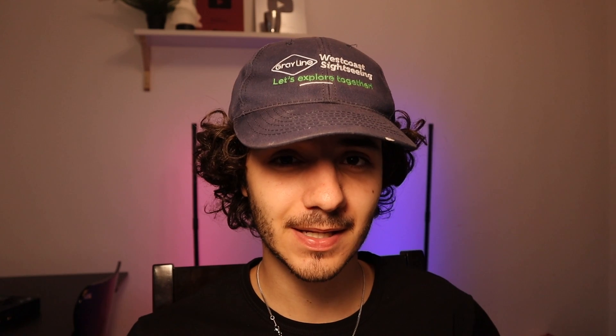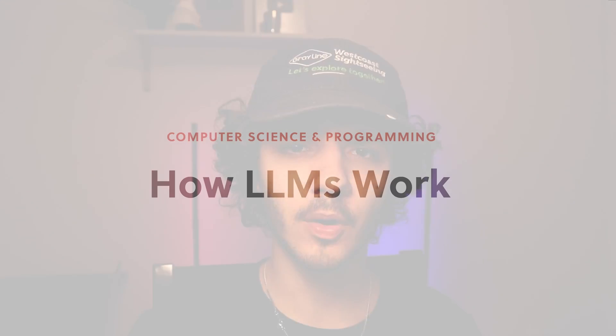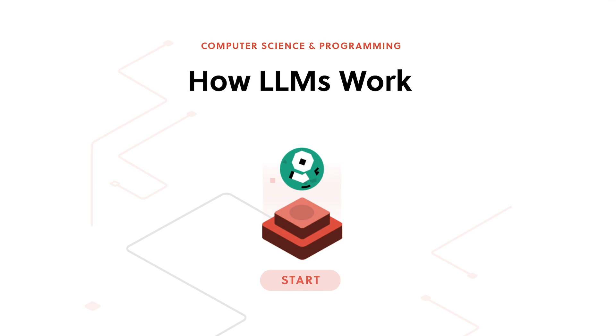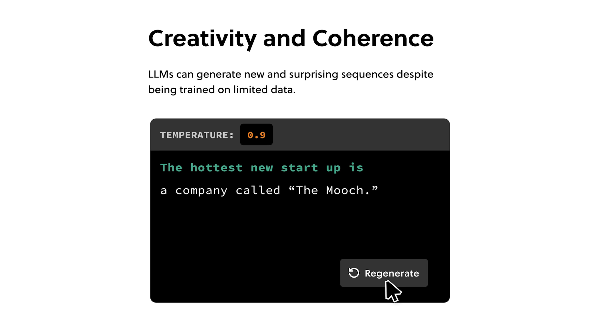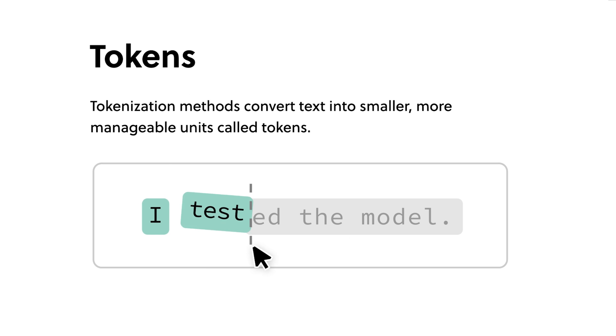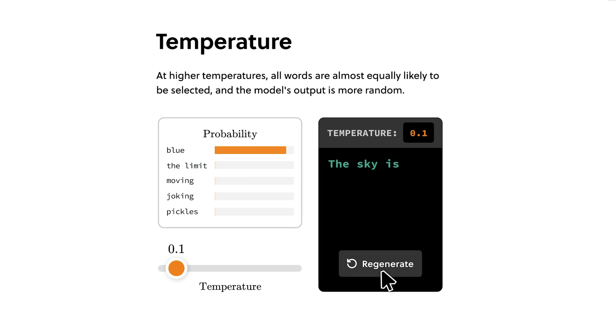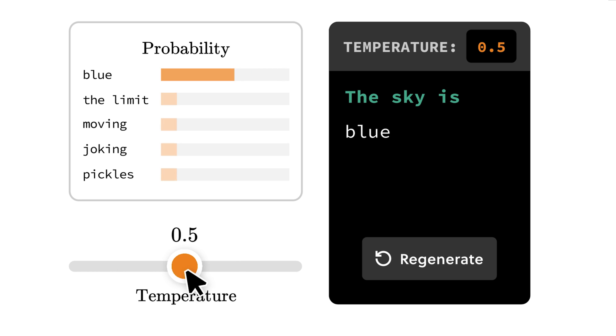It's literally what I preach on my channel, which is learning from the ground up and applying your knowledge. This is what makes Brilliant perfect — I'm able to learn topics I personally wouldn't be able to find online on my own and practice them on a daily basis. For example, I like to learn topics I might not use day-to-day but am interested in. A great example is when I wanted to learn about AI. Just a month ago, I completed their LLM course where I learned about large language models and how they work.